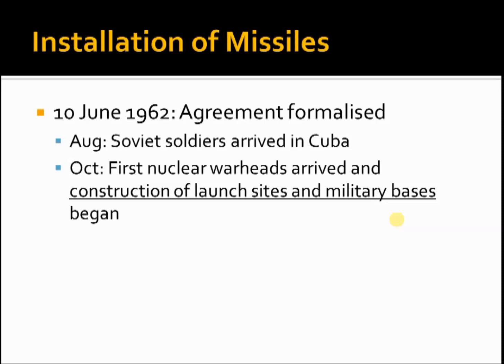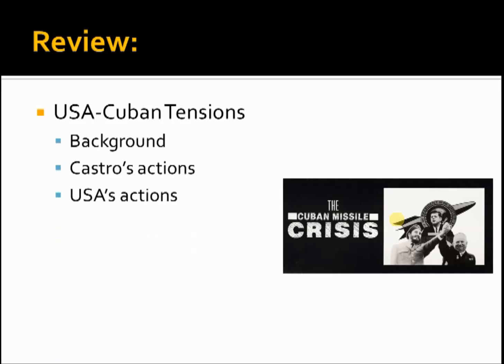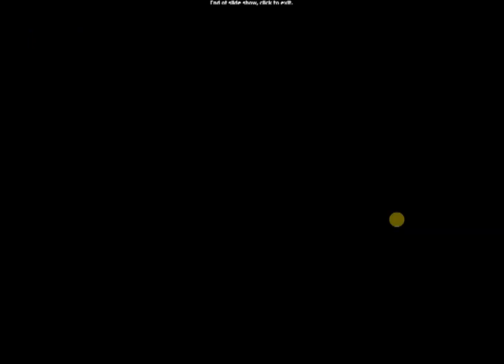So in review: from the previous lesson we looked at US-Cuban tensions, the background to it, Castro's actions and the US's actions in response, and other provocative actions — and how this led to the decision to install missiles, due to reasons both from the Soviet and the Cuban side. It was a win-win situation. We've ended this portion of the Cuban Missile Crisis lesson, and we will continue shortly with the next one. Thank you very much. See you.